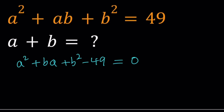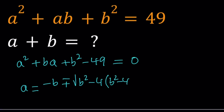Let's go ahead and use the quadratic formula. The quadratic formula is going to give us two solutions, and then we're going to take it from there. So a can be written as negative b plus or minus the square root of b squared minus 4 times b squared minus 49.